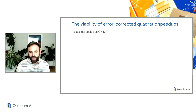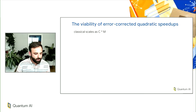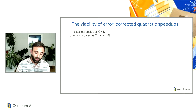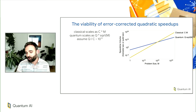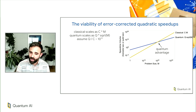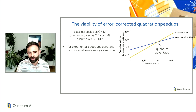Imagine we have a classical algorithm scaling as some constant C times a problem size M — where M might be the database size in a search problem or the number of trajectories in a Monte Carlo simulation. Then we have a quantum algorithm that scales quadratically better, but with a much bigger constant in front of it. Based on this, we can draw a cartoon showing space-time volume required versus problem size for quantum and classical. Because the quantum algorithm starts out so much slower, quantum advantage won't occur until very, very large problem sizes — with the numbers discussed, maybe problem sizes on the order of 10^20. For exponential speedups, this constant factor is easily overcome, but for quadratic speedups it's going to be an issue.